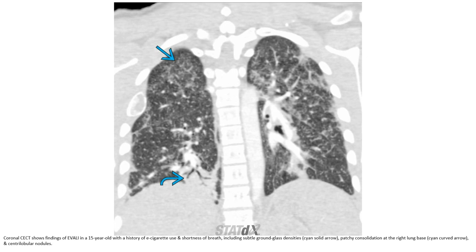Contrast CT findings of EVALI in a 15-year-old with a history of e-cigarette use and shortness of breath, including subtle ground glass density, patchy consolidation at the right upper lobe and at the right lung base, and centrilobular nodules.